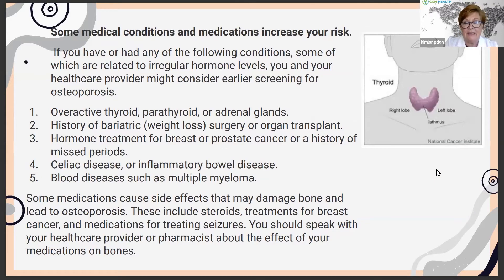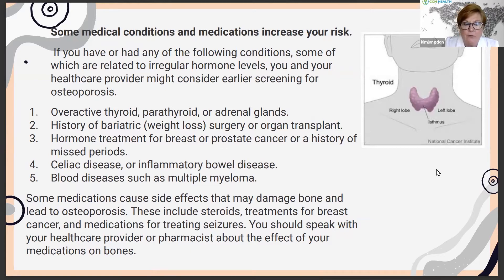Some other things that can increase your risk include an overactive thyroid, parathyroid, or adrenal glands. If you've had bariatric weight loss surgery or an organ transplant — primarily due to the medications — that also raises risk. If you're on hormone therapy for breast or prostate cancer, or if you have a history of always missing your periods throughout your younger years, inflammatory bowel disease, and blood diseases can also lead to osteoporosis, as can medications. Steroids are the most common cause, as are breast cancer medications and medications for treating seizures.